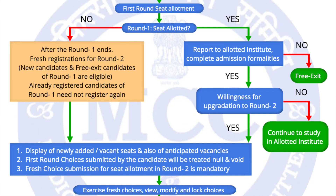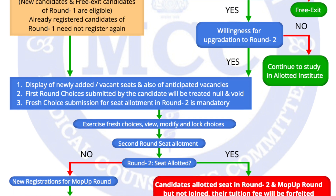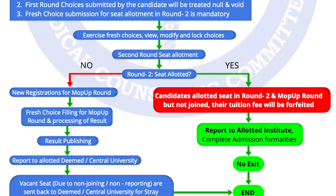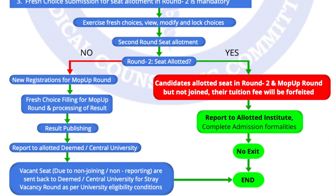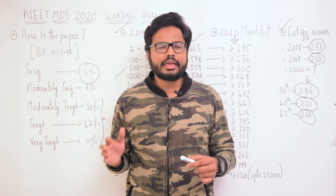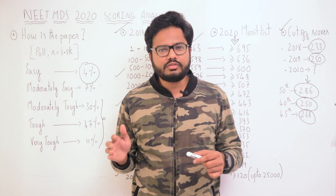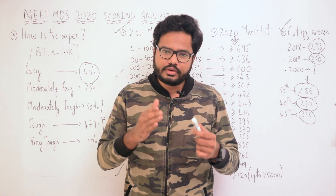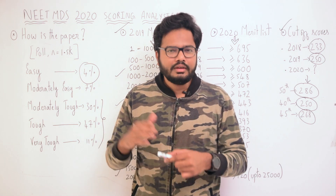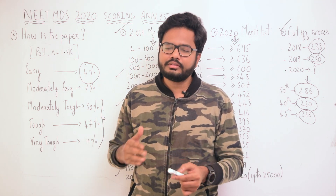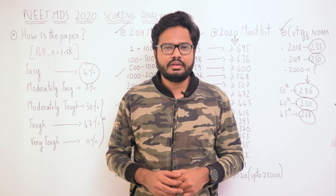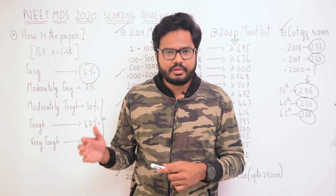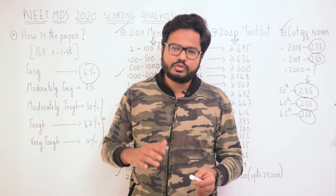That completes the online counseling procedure. For 100% deemed and central university seats, the procedure is more or less the same; however, there is an additional mop-up round. So this is the scheme of online counseling for AIQ 50% seats as well as 100% central or deemed university seats.